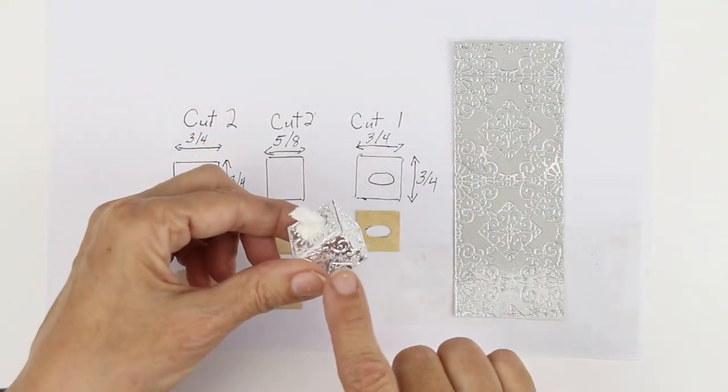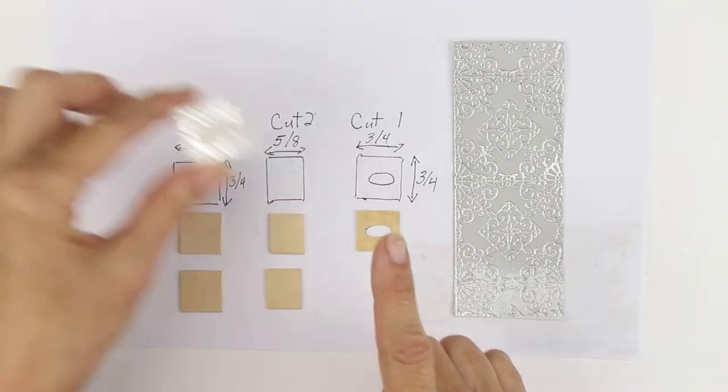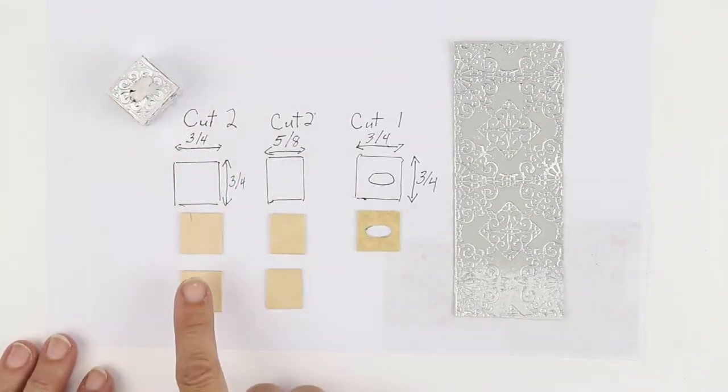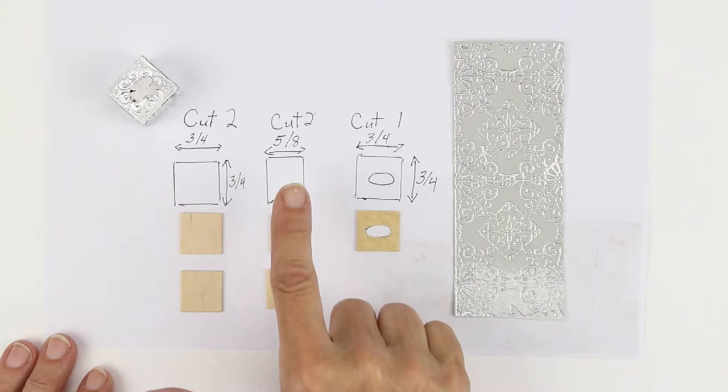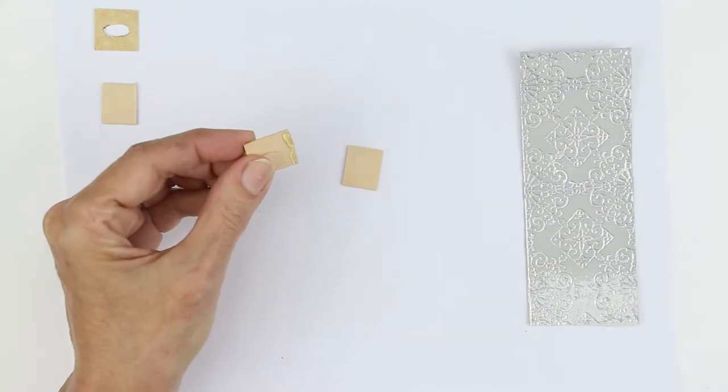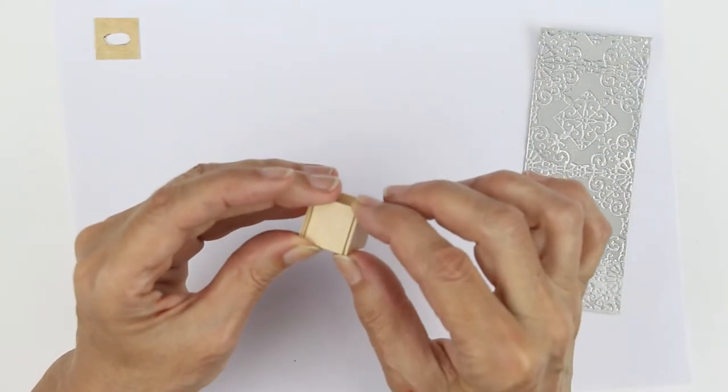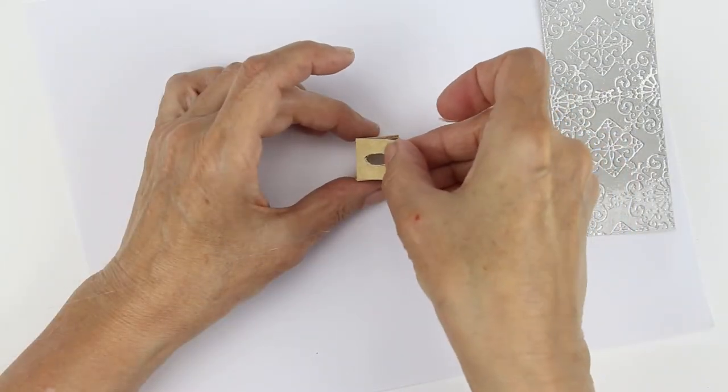For the Kleenex box I use leftover craft sticks. Your sticks should be 3⁄4 inch. Cut 2 to 3⁄4 inch and 2 to 5⁄8 inch. Cut one 3⁄4 by 3⁄4 inch cardstock and put a long oval hole in the center. Hot glue together.